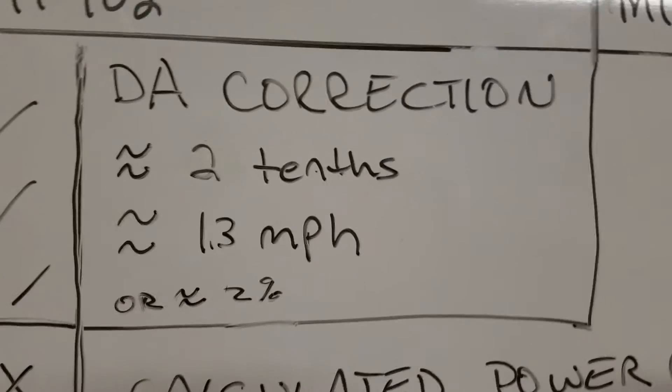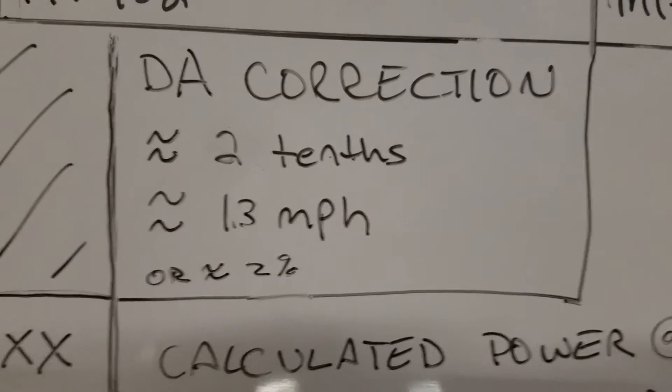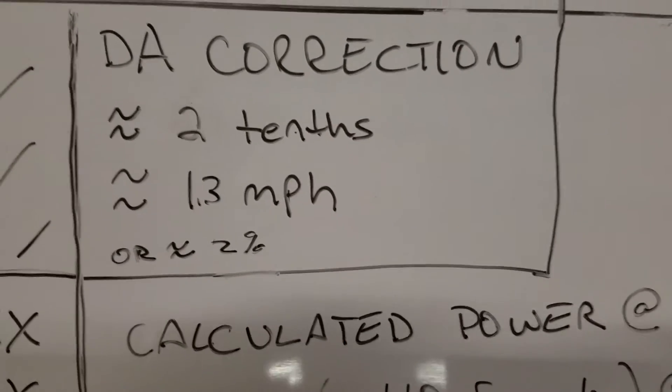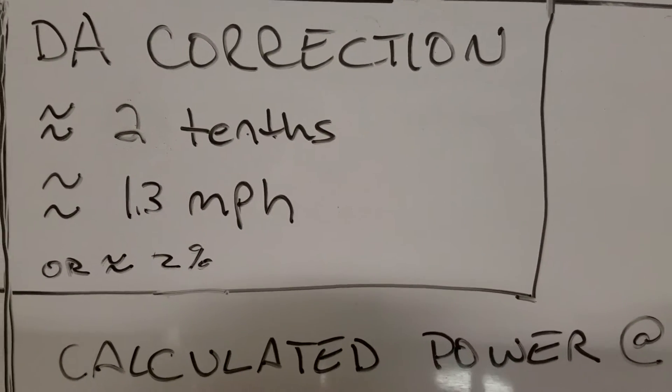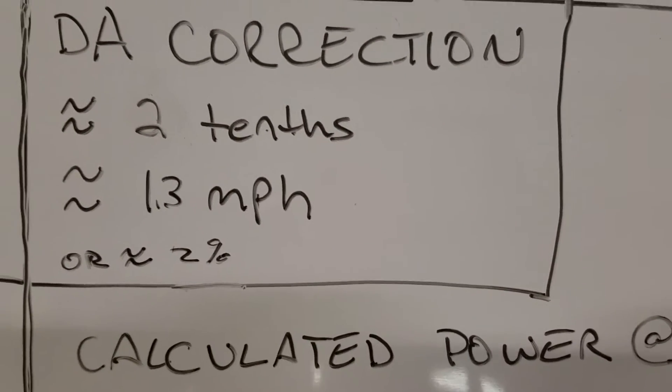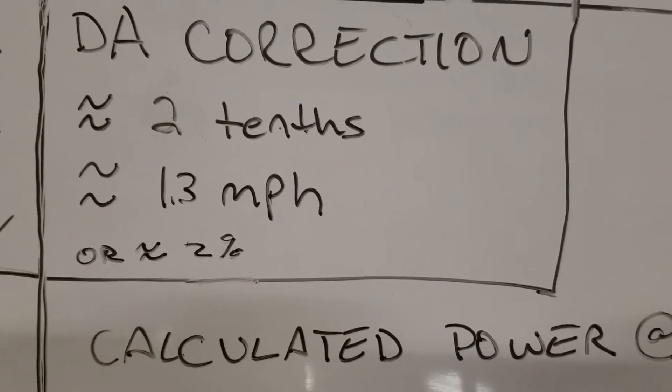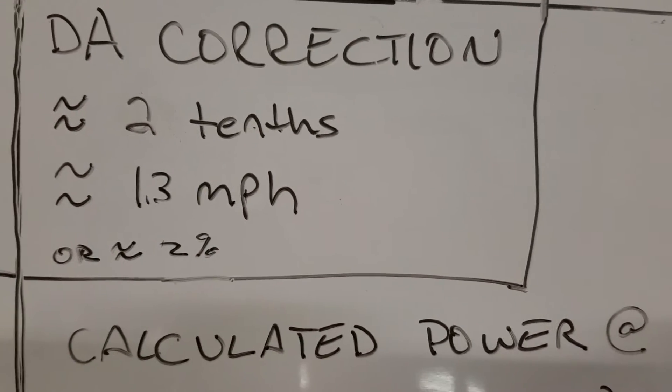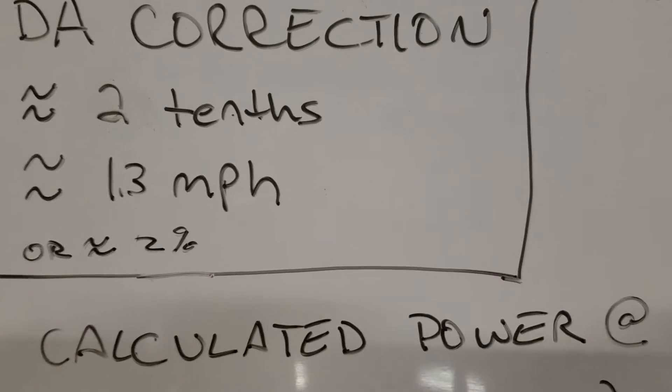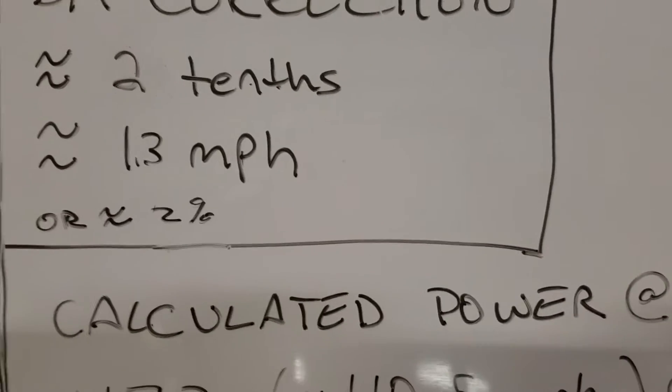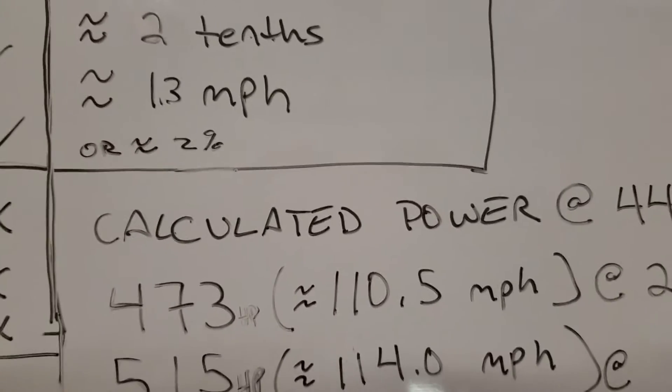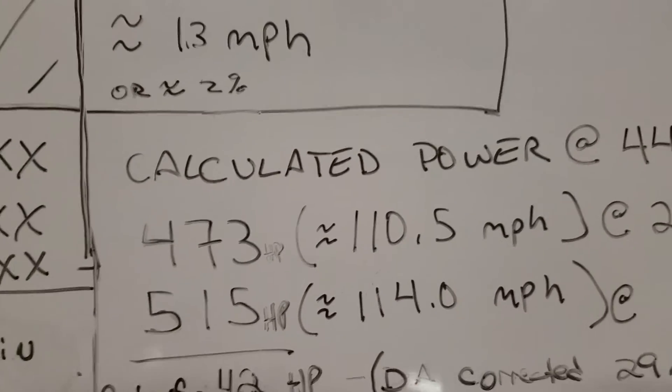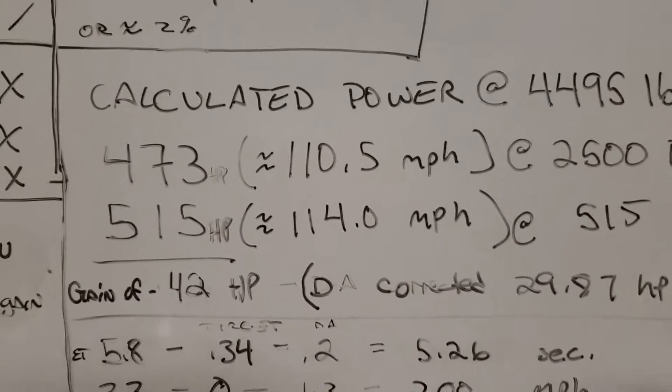Talking about that DA correction now, I'm going to be a bit generous. I'm going to say that DA last night was probably worth a couple of tenths, give or take. Probably, like I say, it might be a bit generous, but I'm going to just go ahead and roll with that just for purposes of conversation. And I'm going to say that it probably gave us about a 1.3 mile per hour increase as well, or about a 2% increase. So I just want to throw that out there for you guys. Just trying to give you guys as much info as I possibly can.